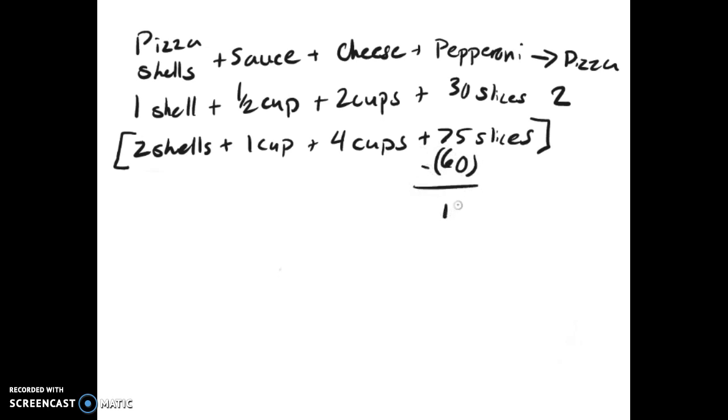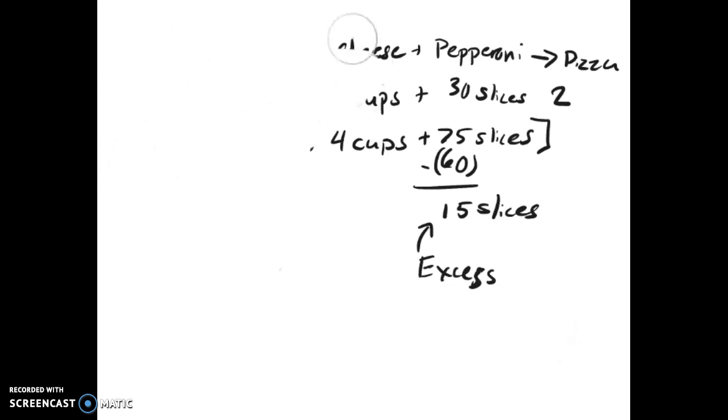So if you take that out, there are still 15 slices left unclaimed. This is called your excess reactant. This is what's left over that you don't need, or in this case isn't used up in the reaction.